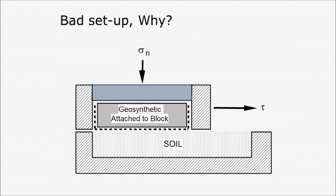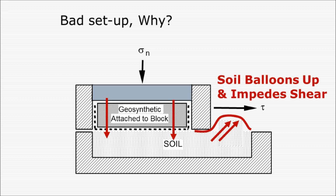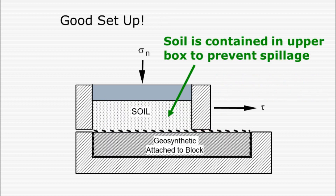As far as setup is concerned, the bottom tray is typically much longer than 300 millimeters or one foot. A bad configuration would have soil on the bottom that balloons up as normal pressure is applied. In this particular case, you'd be much better off having the geosynthetic on a rigid plate below the sample and then having the soil in the upper box traveling along.